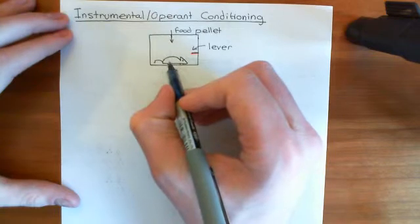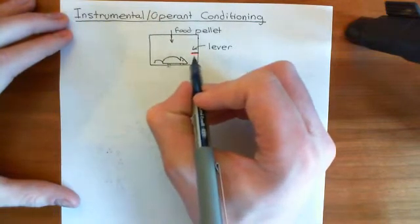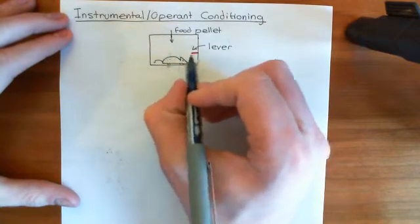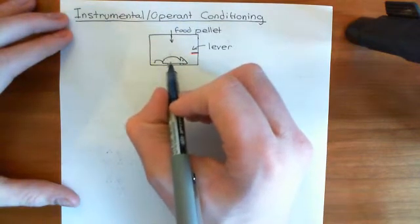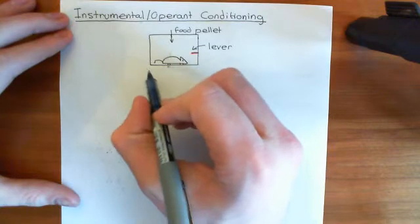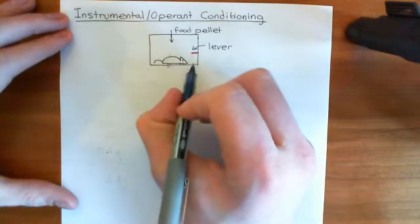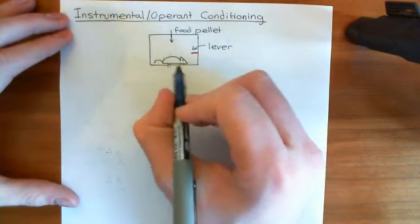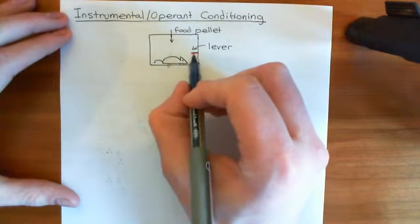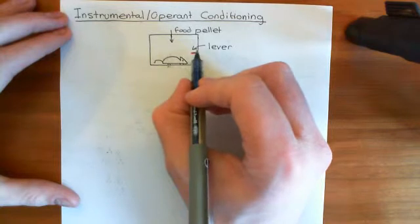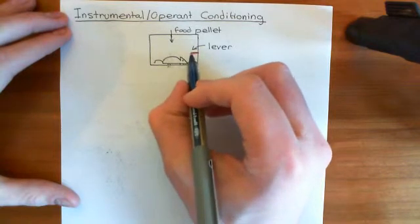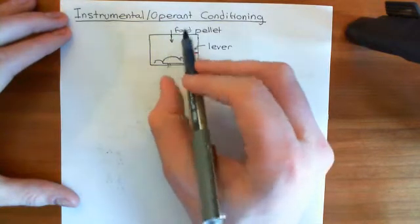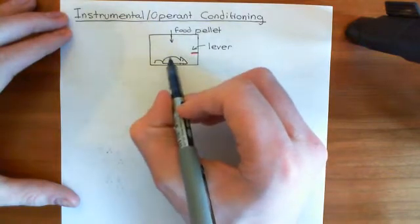It will be very happy, but it won't instantly know that it was the lever that did that. What it will do is take a few more tries. It will continue exploring the box because the food pellet wasn't that big. So it continues exploring and then just happens to bang into the lever again, and then the food pellet appears again. There will be a few trials of this happy accident, and then gradually what the rat will learn is that pressing the lever — banging the lever down — is associated with a food pellet dropping from the roof.